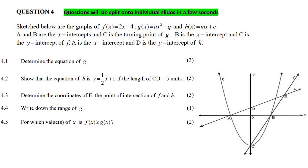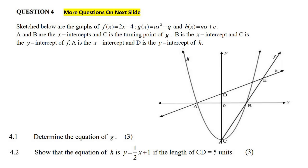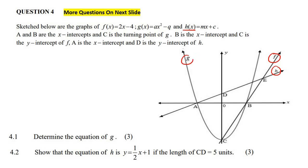Here are all the questions we are going to be looking at in this specific question, but I'm going to split them up onto different pages just so we have more space. It says that sketched below are the graphs of F, which is the straight line over here. There are three graphs: G, which is the parabola, and then H, which is the straight line over here. They have labeled them for us: F, H, and G.